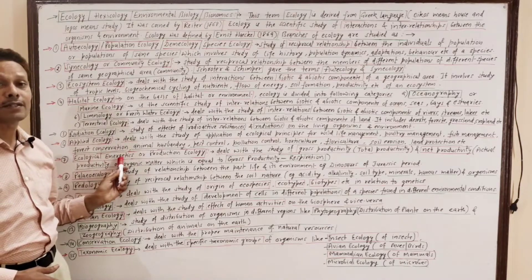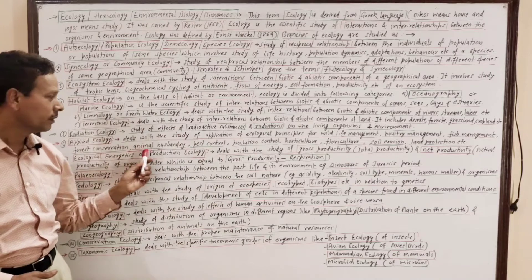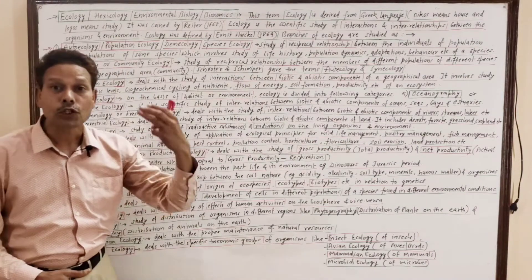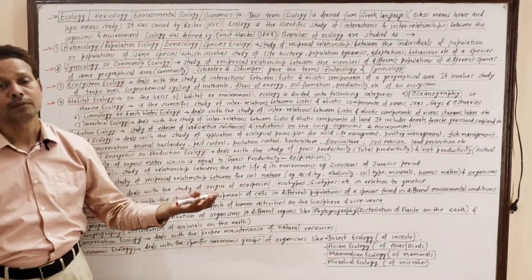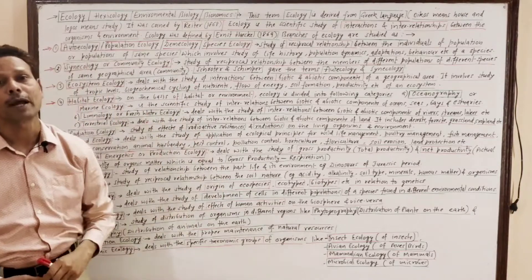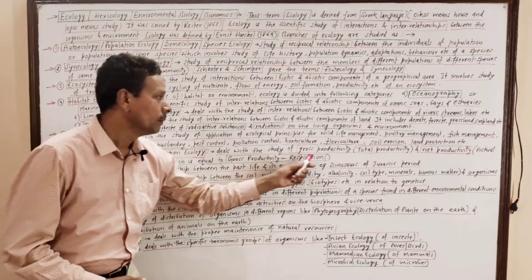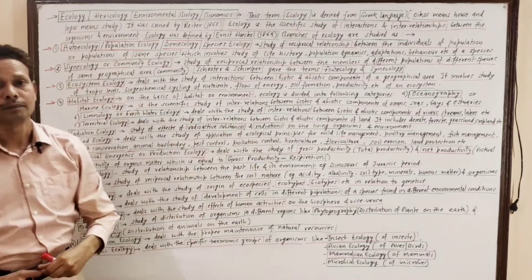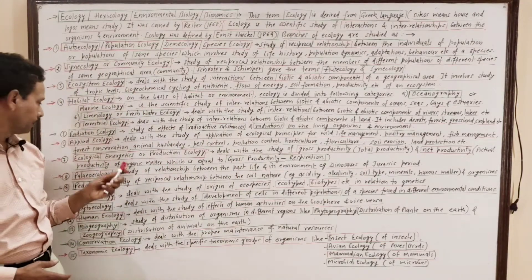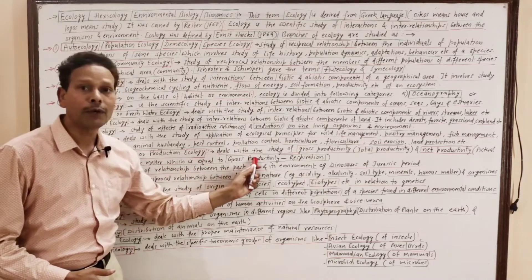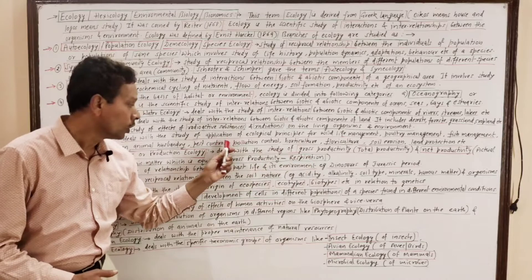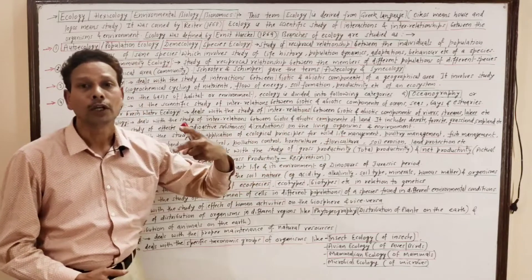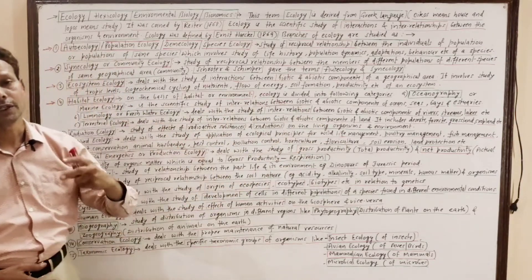Ecological energetics, also called production ecology, deals with the study of gross productivity — meaning total productivity of an ecosystem, including total production of biomass and organic matter. It also deals with net productivity, which is net gain equal to gross productivity minus respiration, meaning total production minus loss of energy due to respiration.